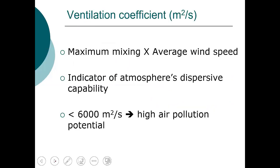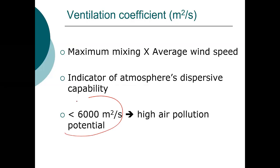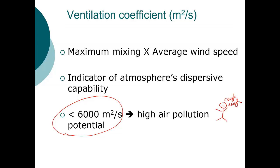We can also use the ventilation coefficient to determine the extent to which a pollutant will disperse — that's the maximum mixing depth times the average wind speed. If that value is less than about 6,000 square meters per second, the pollutant is not going to disperse readily, and you've got a high air pollution potential.